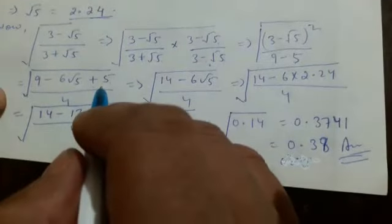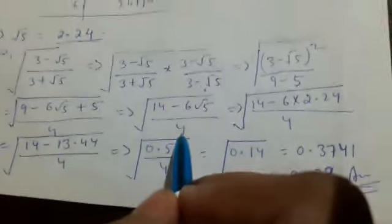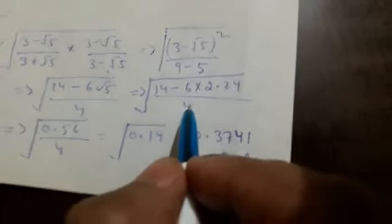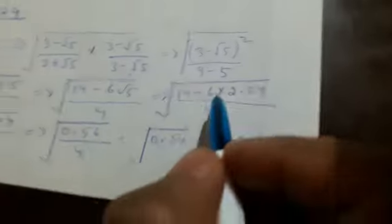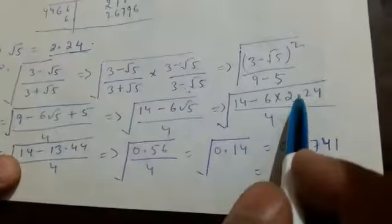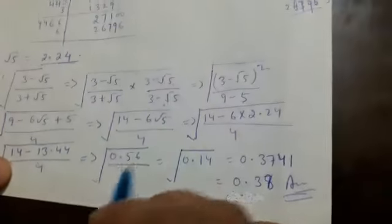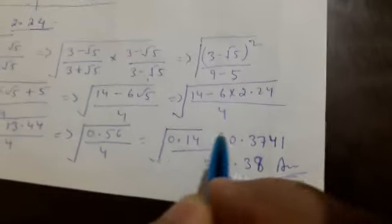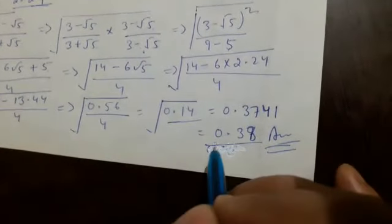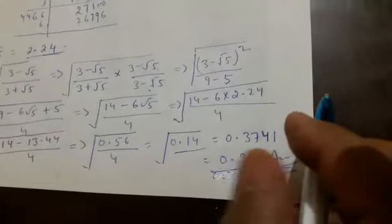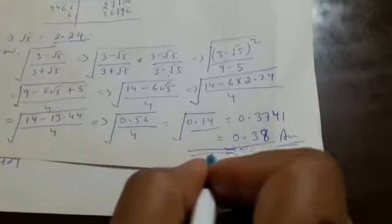So the numerator is 9 + 5 − 6√5 = 14 − 6√5, over the denominator 4. Substituting √5 ≈ 2.24, we get 14 − 6 × 2.24 = 14 − 13.44 = 0.56, upon 4. Dividing gives 0.14, and the square root of 0.14 equals approximately 0.3741. Rounding off to two decimal places, the answer is 0.38.